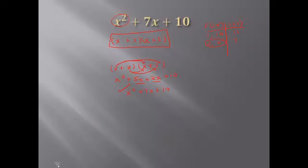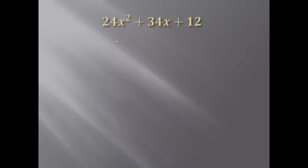Now it's a little different when you have a number in front of x squared — there are a few different methods: trial and error, the AC method, grouping. The first thing I see here is that all terms have a common factor of two, so I can factor out a two. Dividing two out of each term and placing it outside parentheses gives me two times the quantity 12x squared plus 17x plus 6.